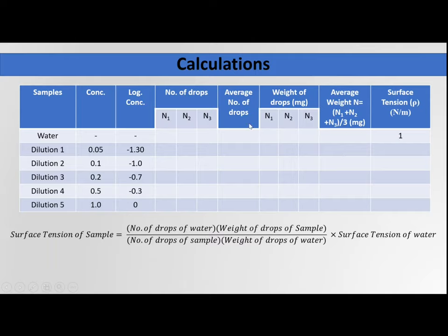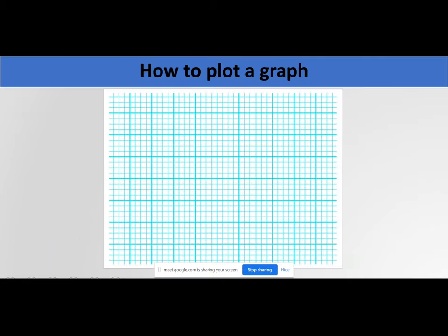For surface tension, you will use this formula: surface tension of the sample equals the number of drops of water multiplied by the average weight of your dilution, divided by the number of drops of the sample multiplied by the weight of drops of water, multiplied by the surface tension of water.